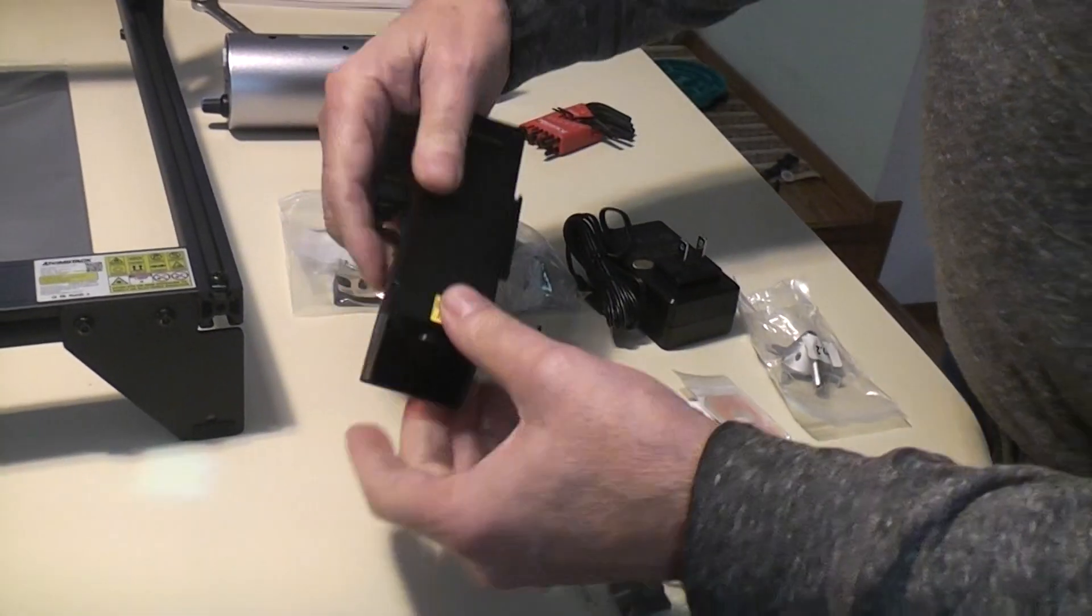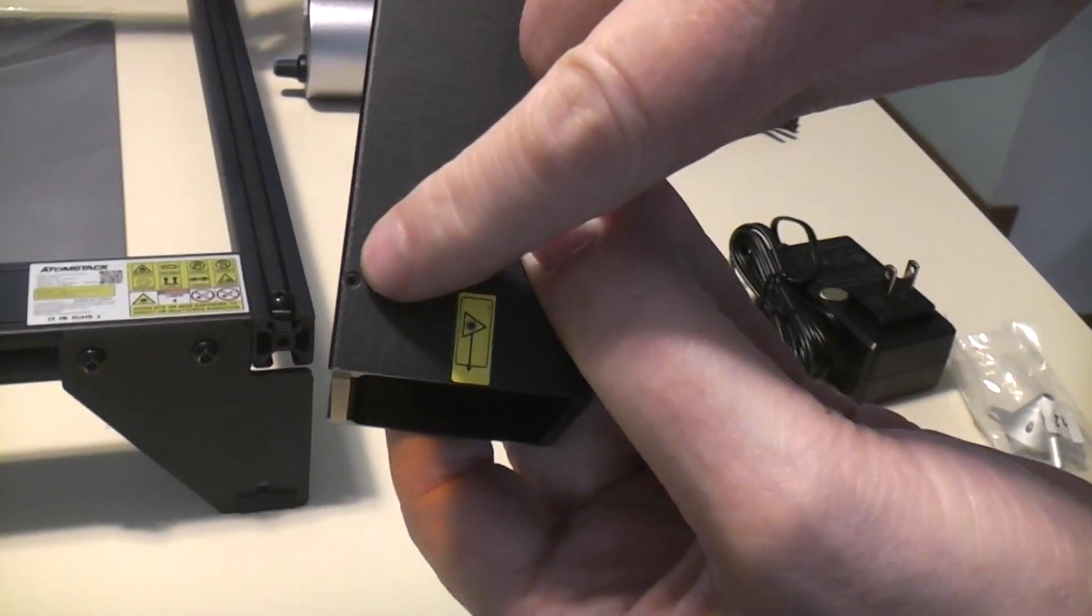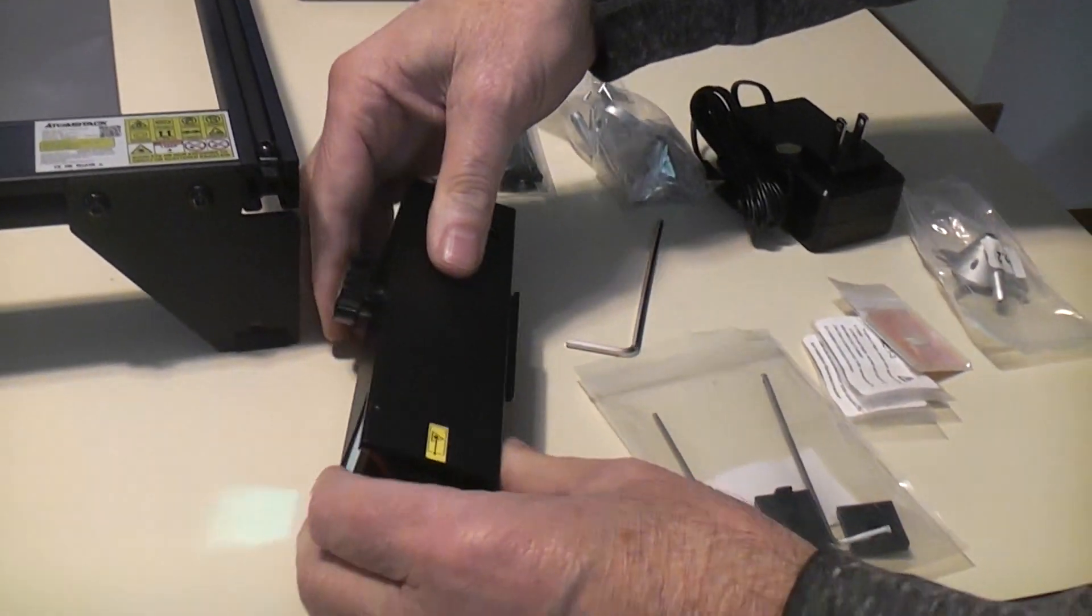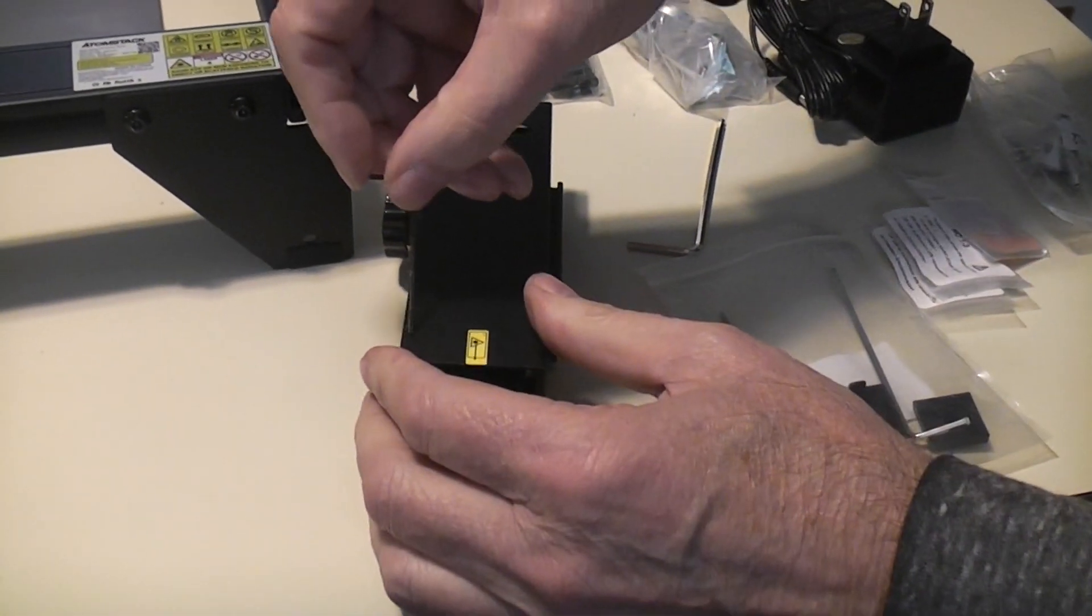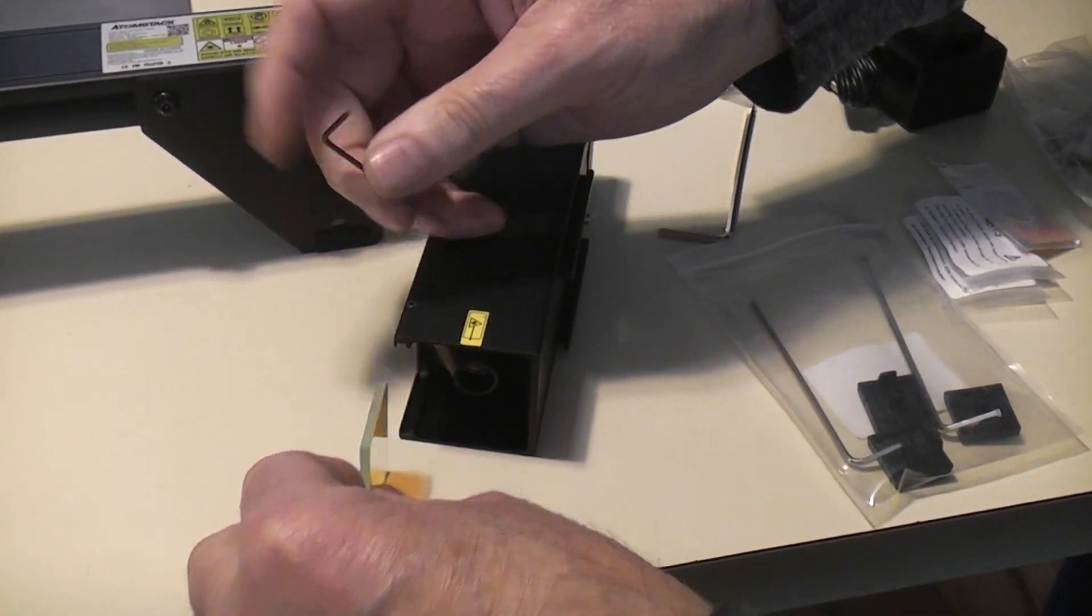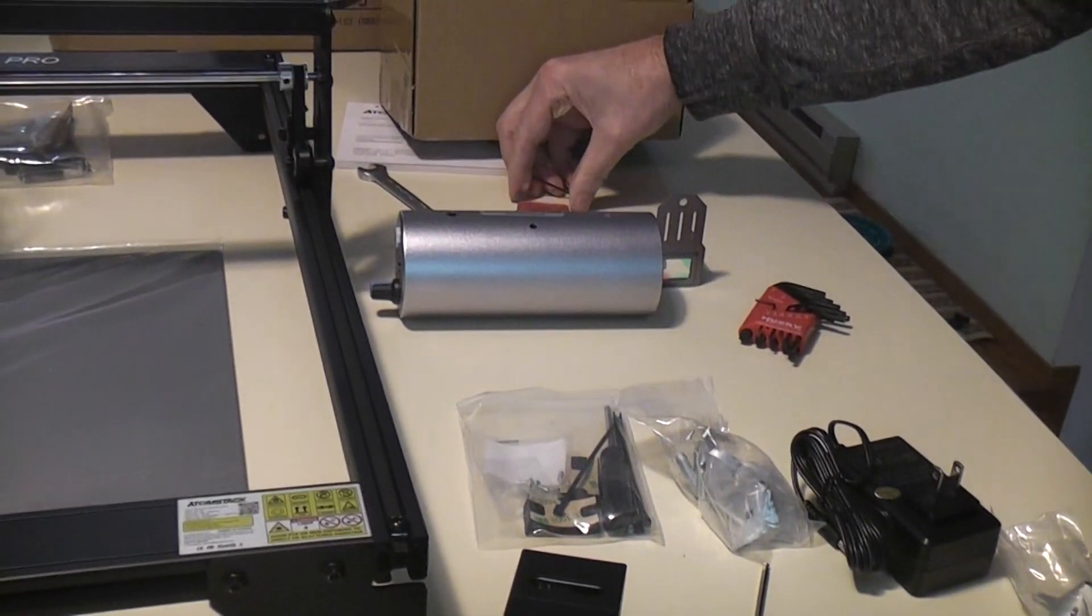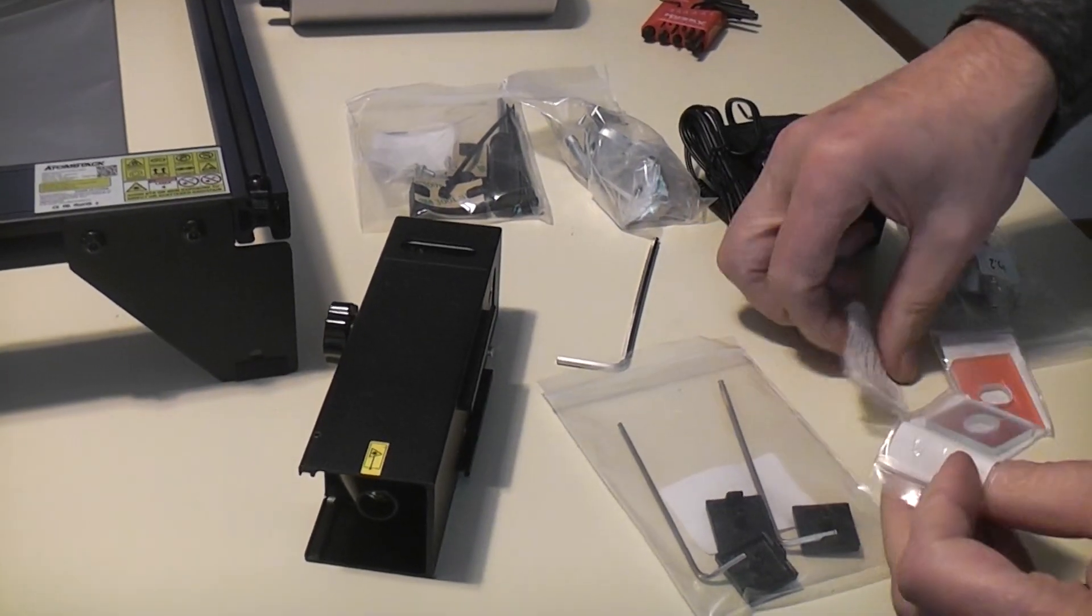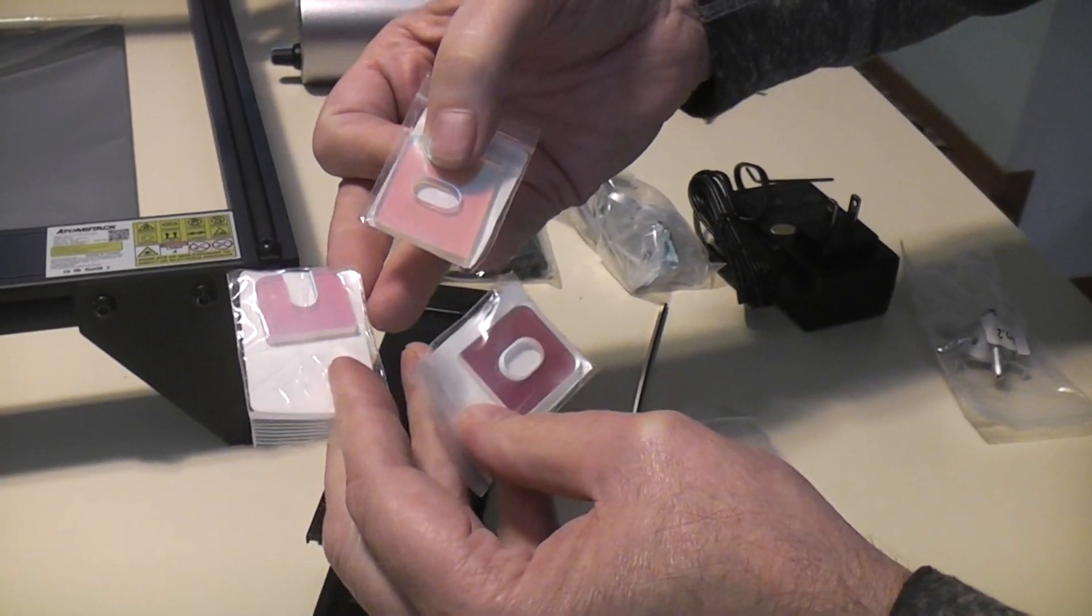Okay so there is a little teeny Allen screw right there which is only snug to hold in this special piece of filtered glass and you have to remove that and they didn't provide the Allen wrench for that. Now go ahead and save this piece of glass in case you ever want to take your air assist off, but what you're going to find is they send you three different types of new glass to replace this whole system.